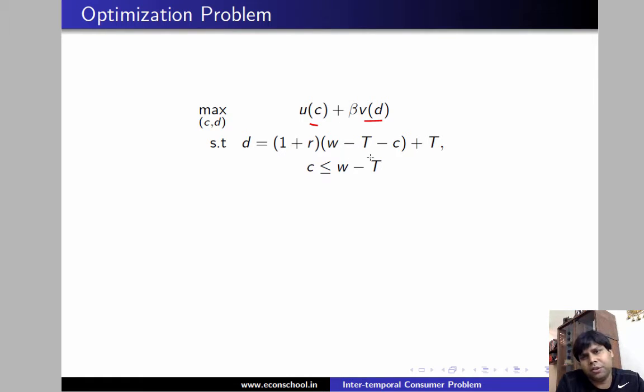So his consumption in period 2 must be his savings plus the rate of return on savings plus the transfers from the government. And we are also assuming because it is not given in the problem that there are no borrowing options available. So he can only lend if he wishes and he can earn rate of interest on it but he cannot borrow money if he needs it. So in that scenario C will be less than or equal to W minus T.